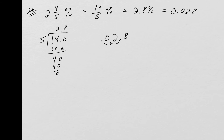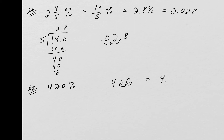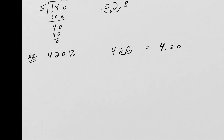What about a very large percentage, like 420%? Same thing — remove the percent symbol, giving 420, and move the decimal point two places to the left: this equals 4.20, or 4.2. It's a number greater than one because it's over 100%. And 100% itself as a decimal — you move the decimal two places to the left from 100, giving exactly 1.